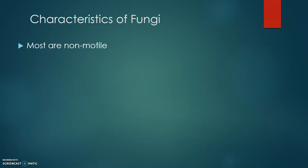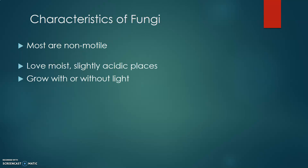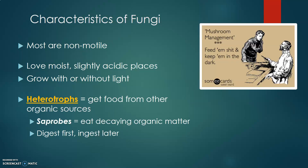In addition to being eukaryotic, having cell walls made of chitin, and being mostly multicellular, fungi are also non-motile or sessile. They like to live in moist places that are slightly acidic, and they can grow with or without light. Fungi also get their food from other organic sources, so they're what's known as heterotrophic — hetero meaning different and trophic meaning energy — so fungi get their energy from a different source.